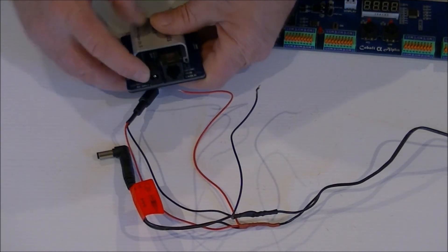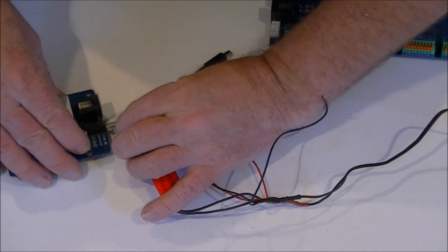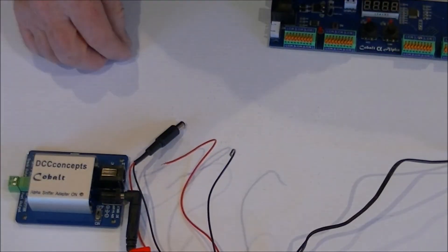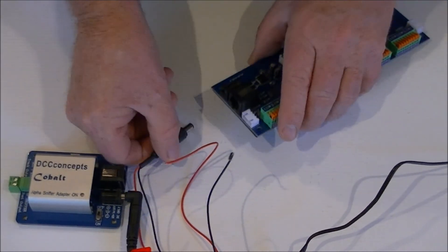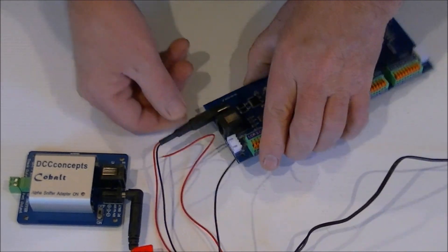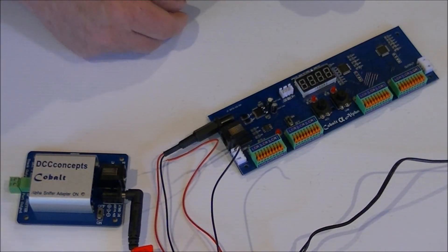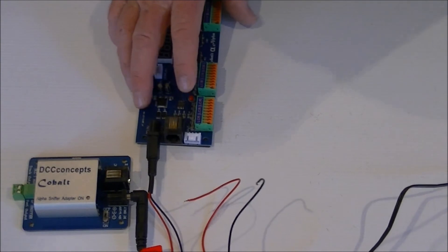Cobalt sniffer has a power unit. Like that. The cobalt alpha encoder has a power unit here. Now these are all positive in the centre, negative on the outside. Don't get them mixed up, you will fry something.